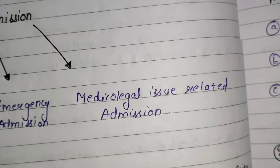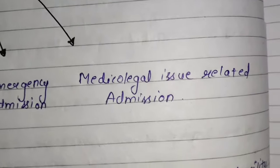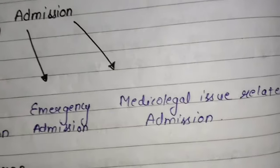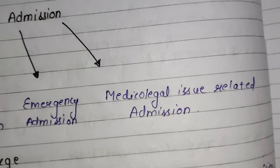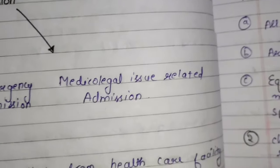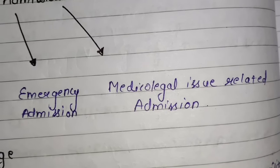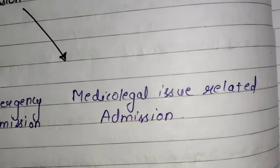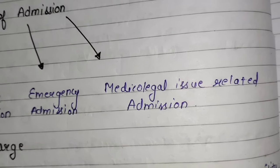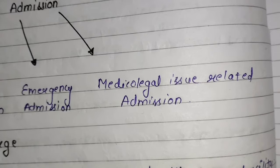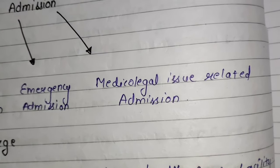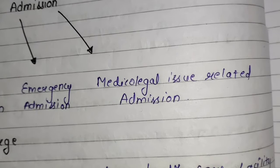Third one is medical legal issue related admission. Ismein jaise koi criminal hai, uska admission hua ho hospital ke andar, ya koi rape case related case aaya ho hospital ke andar. Ismein jo chief medical officer hota hai aur police hota hai, unko inform karna bahut zaroori hota hai, aur inका jo record hota hai, wo rakha jata hai properly.